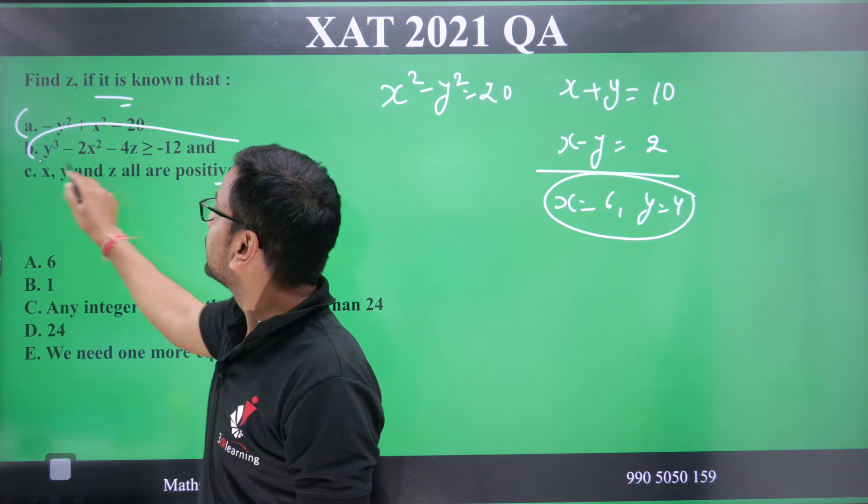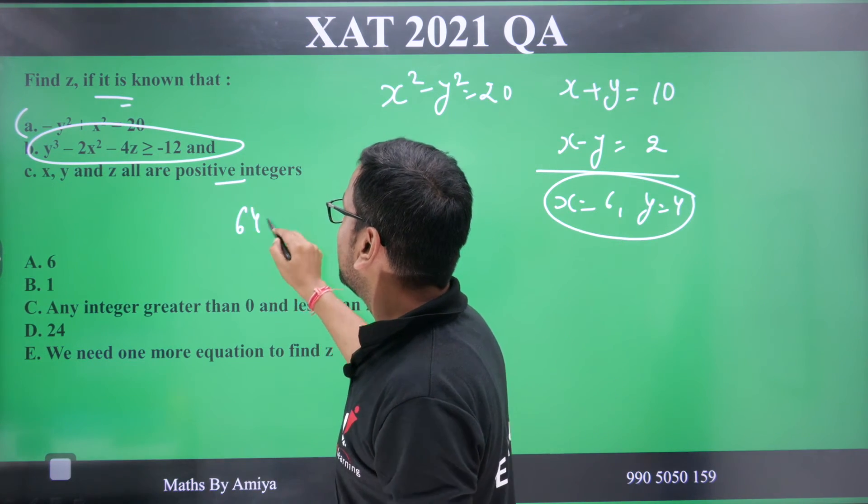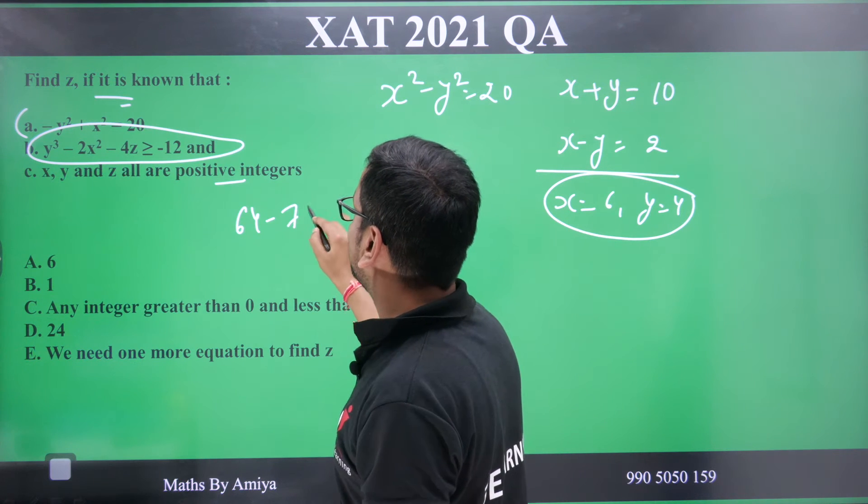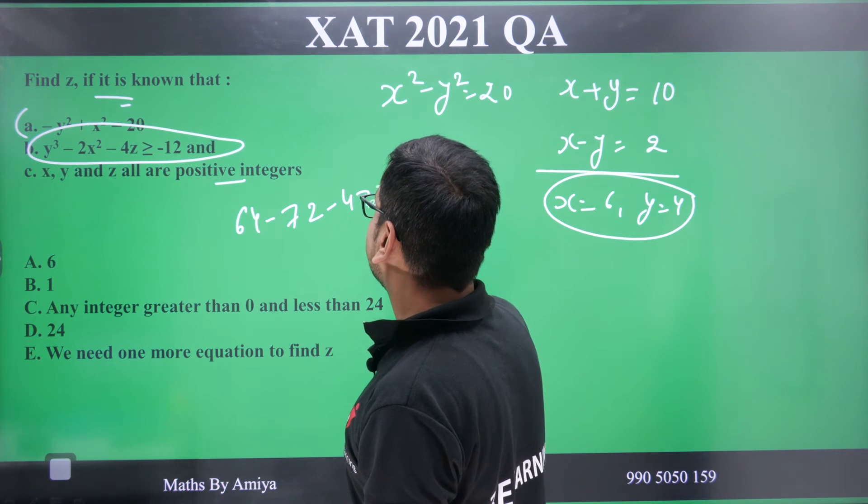Then we work on this, y³, 4³ is what, 64, minus, 6 square is 72, minus 4z is greater than equal to minus 12.